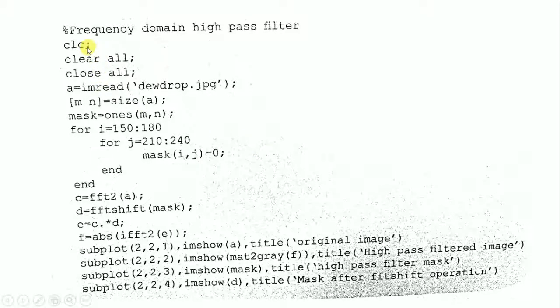Here is the MATLAB code which defines the frequency domain high pass filter. We know that the instructions CLC, clear all, and close all are used to clear the command window, clear the previous values, and close all. Here, A equal to imread of dot jpg reads the image.